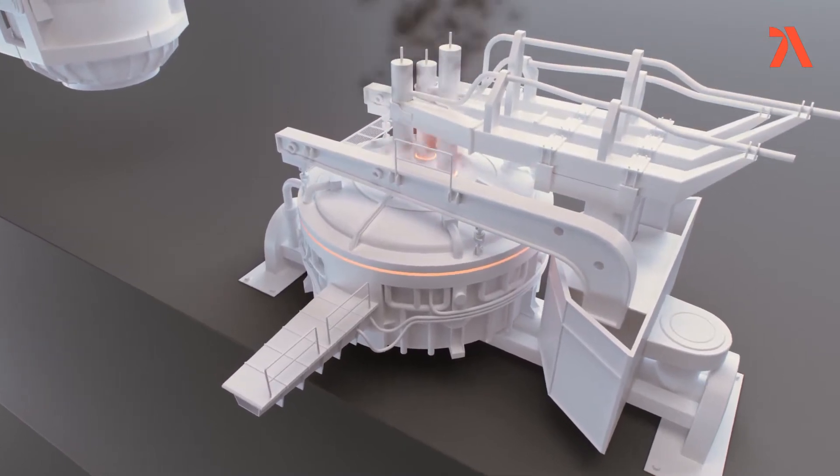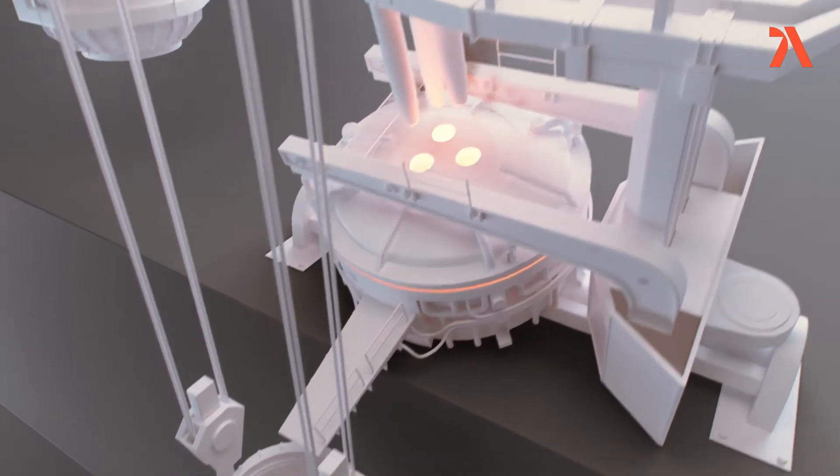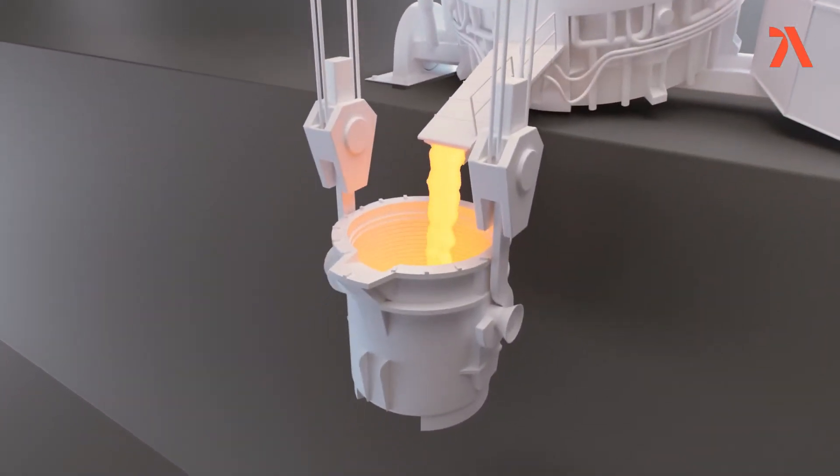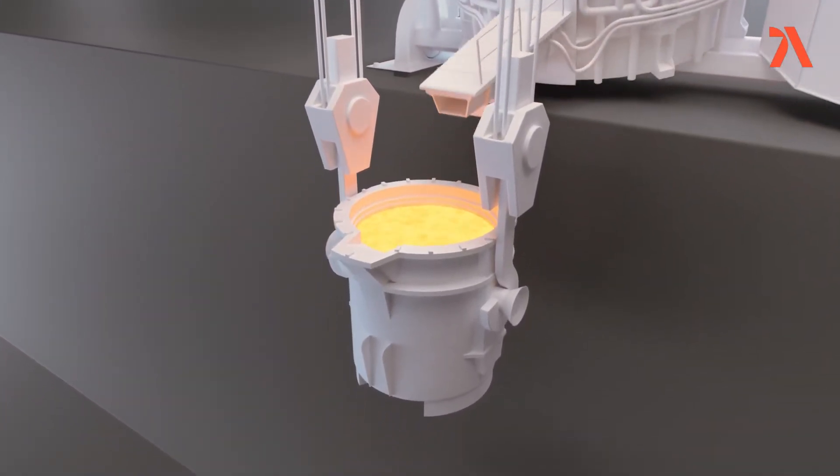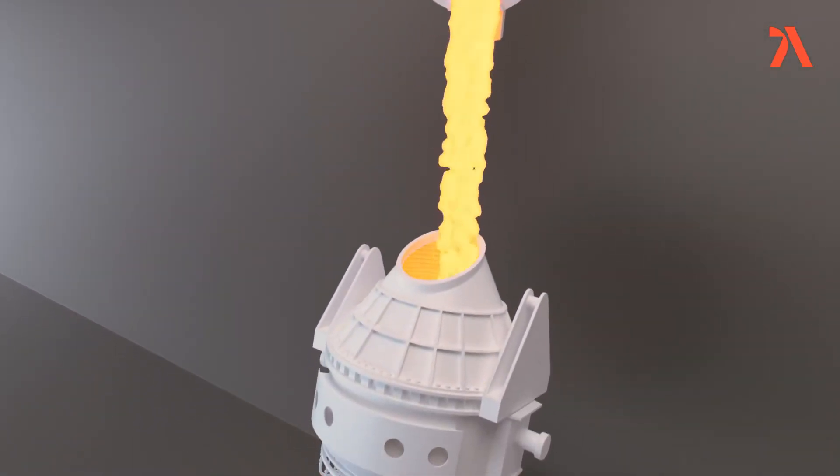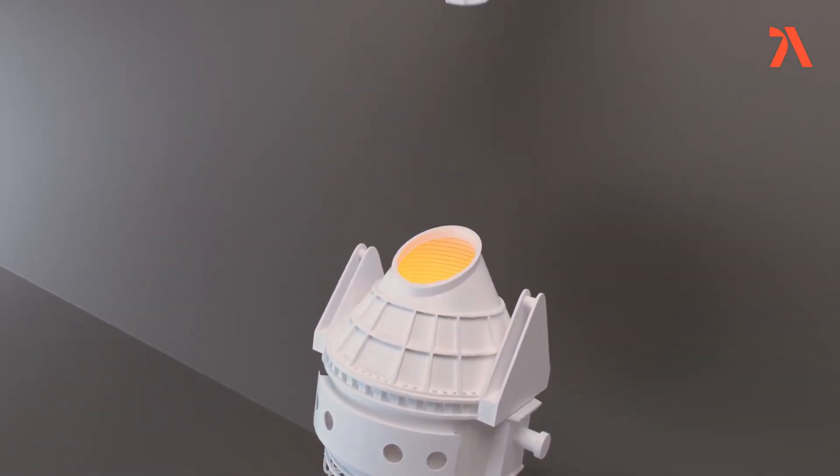Melting is done at 1600 degrees Celsius in an electric arc furnace. In the argon oxygen decarburization vessel, carbon content is reduced to low levels.